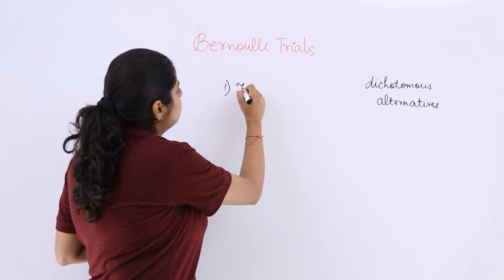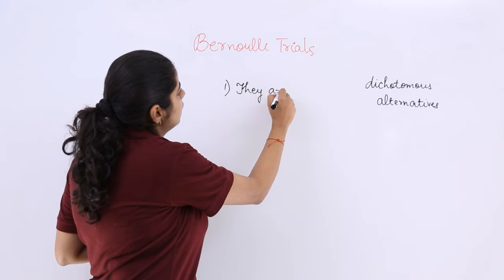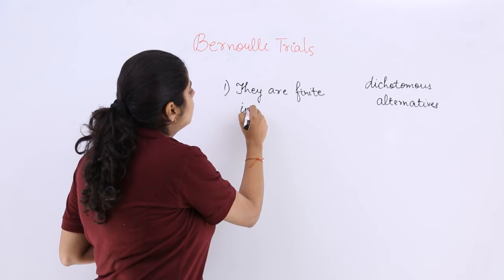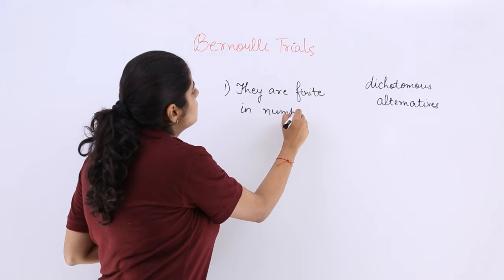The first is they are finite in number. They are finite in number. That means you can count them very easily.